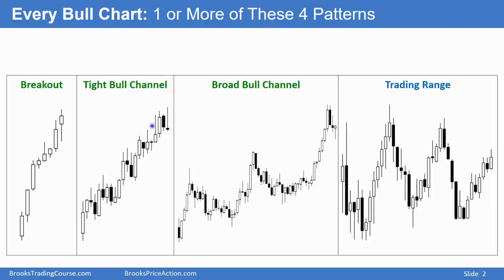So if this is what the five-minute chart looks like, this is what the 15 or 60-minute chart looks like. Next, a broad, bold channel. The market's making higher highs and higher lows, so it's a bold trend. But sometimes the pullbacks are so strong the market becomes always-in-short. And traders can make money buying and selling, even though it's a bold trend.